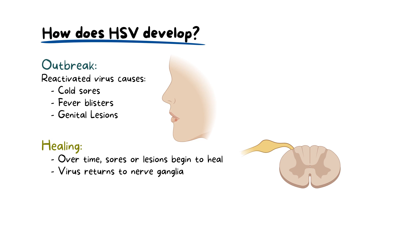HSV's unique feature lies in its ability to switch between an active, symptomatic phase and a dormant, asymptomatic phase. This cycle of reactivation and dormancy can repeat multiple times throughout a person's life.